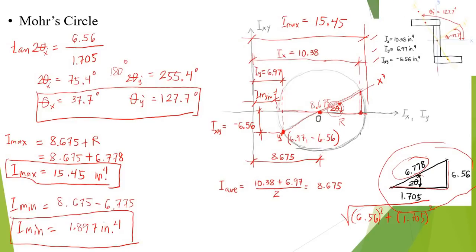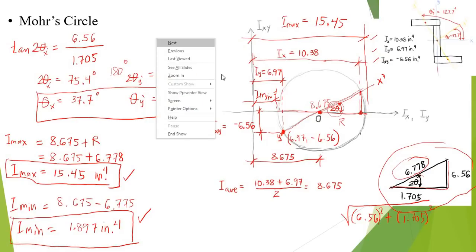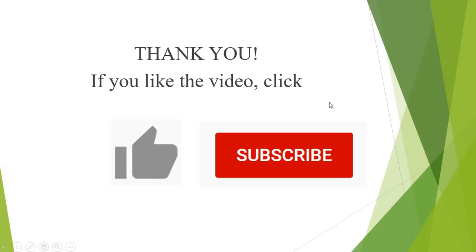X prime is at 37.7 degrees with respect to the horizontal axis and Y prime is oriented at 127.7 degrees with respect to the horizontal axis. Our maximum and minimum values are I_max equals 15.45 and I_min equals 1.897. If you like the content of this video, click like, subscribe, and please share. Thank you, bye bye.